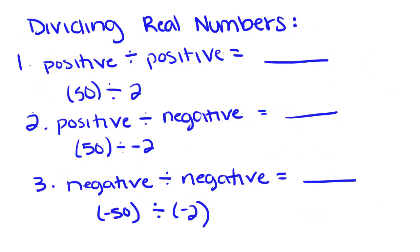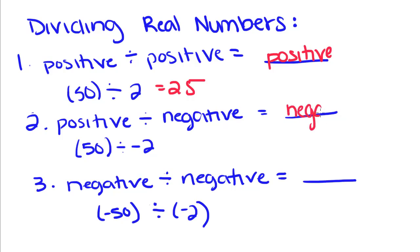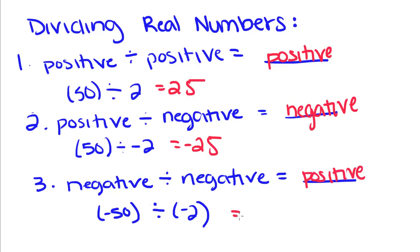Now we're going to move on to division. The same sign rules apply: a positive divided by a positive gives a positive — so 50 divided by 2 gives you 25. A positive divided by a negative, or a negative divided by a positive, gives a negative — so 50 divided by negative 2 is negative 25. A negative divided by a negative gives a positive — so negative 50 divided by negative 2 gives you positive 25.